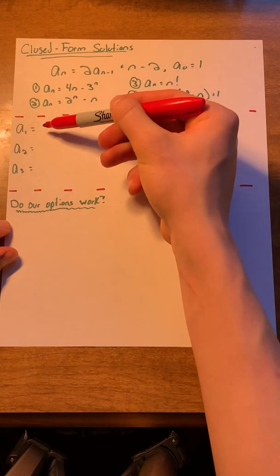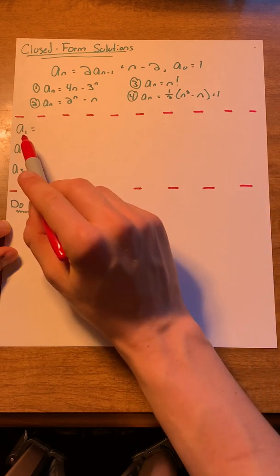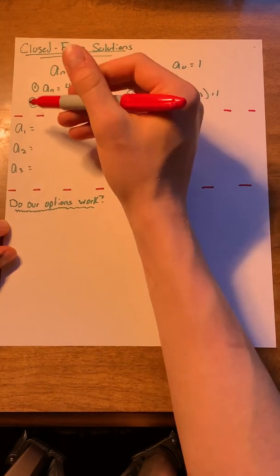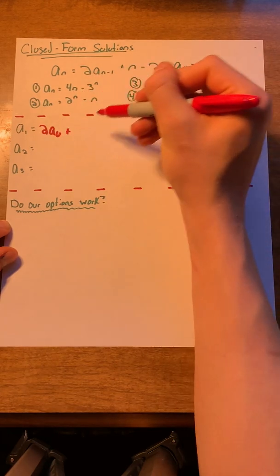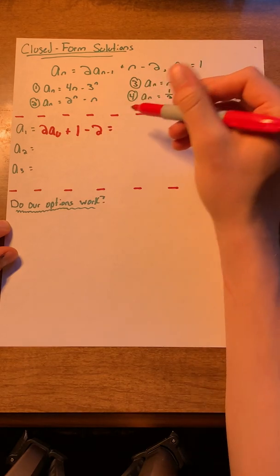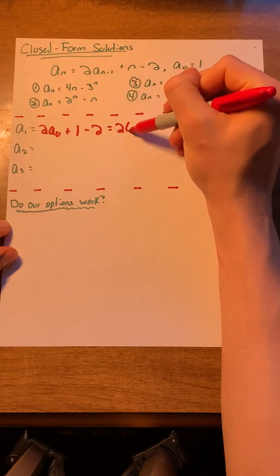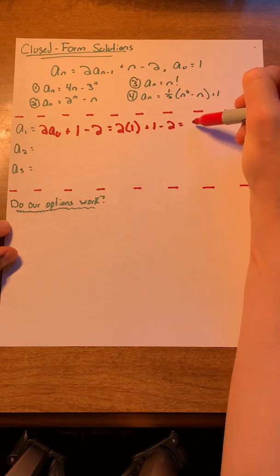Firstly, what I like to do is solve out for the first few terms of the relation. So let's solve for those. Firstly, a of 1. a of 1 equals 2 a of 0 plus 1 minus 2. This equals 2 times 1 plus 1 minus 2, which equals 1.